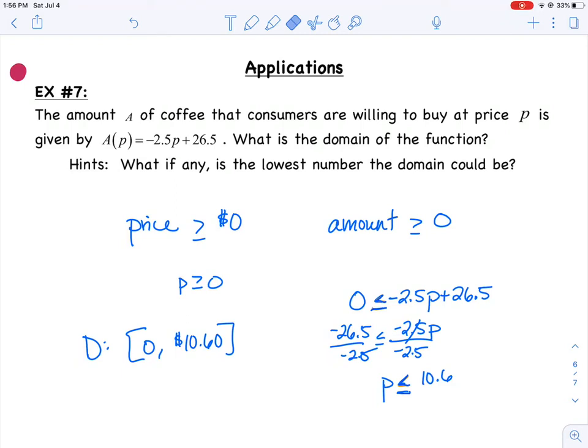Or if we're talking about time, it doesn't make sense for time to be negative. We can have half a second or half an hour. Fractions make sense, but negative numbers wouldn't make sense if we're talking about time. So sometimes we have domain restrictions when we're talking about certain real-life application problems.